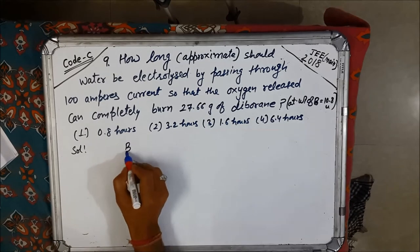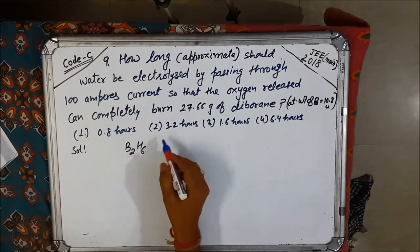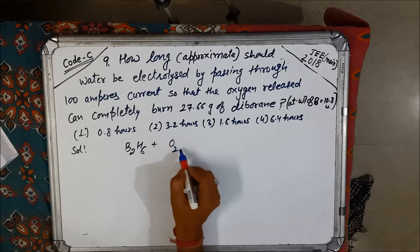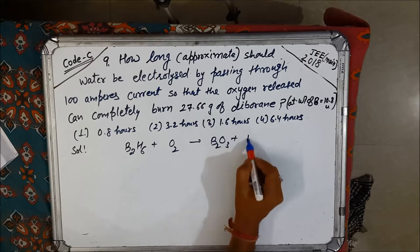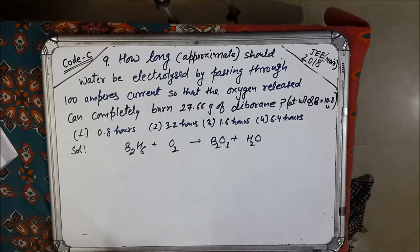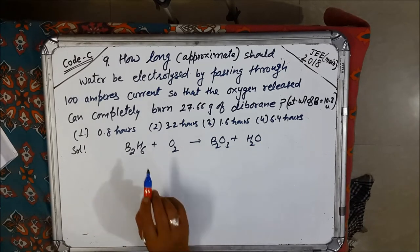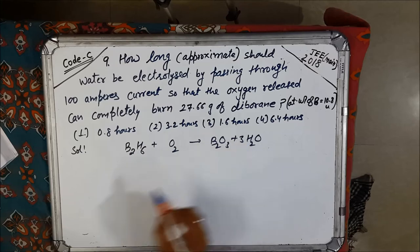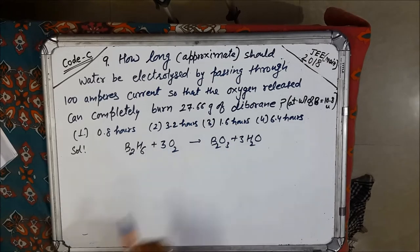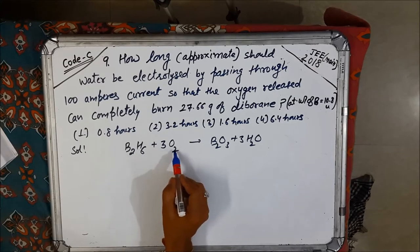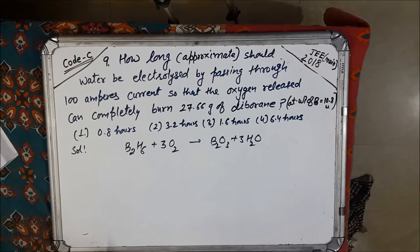You know diborane is B2H6. When it is completely burned in oxygen we get B2O3 plus H2O. First we balance it: B2 is already balanced, hydrogen needs 3H2, so total 3O2. That means we need 3O2 with respect to 1 B2H6.